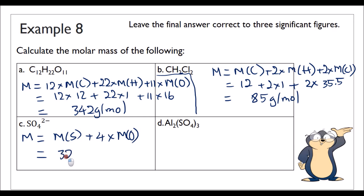Example 8c: Sulfur is 32.1, plus 4 times oxygen (4 times 16 = 64): 32.1 plus 64 = 96.1 grams per mole.